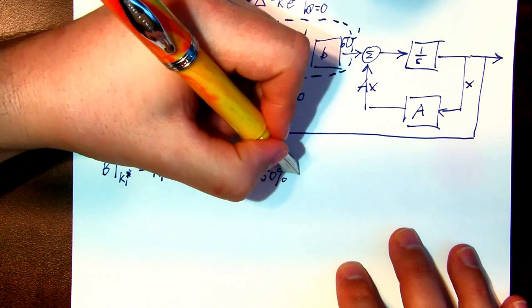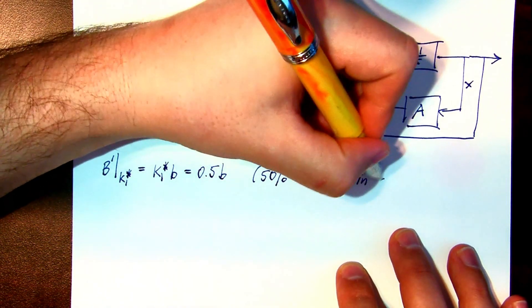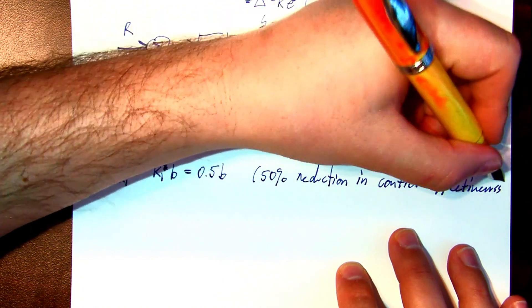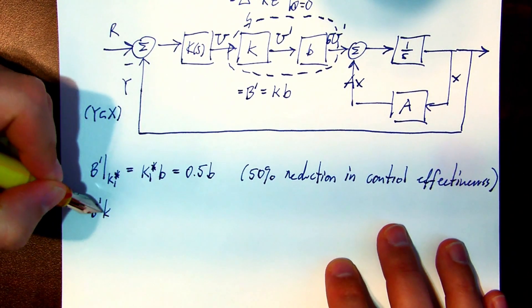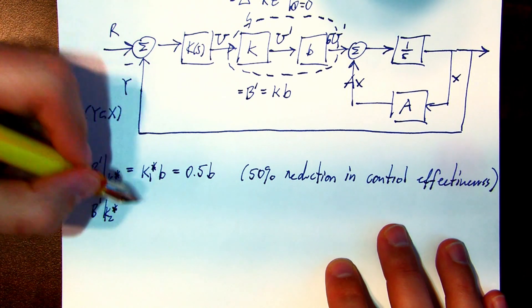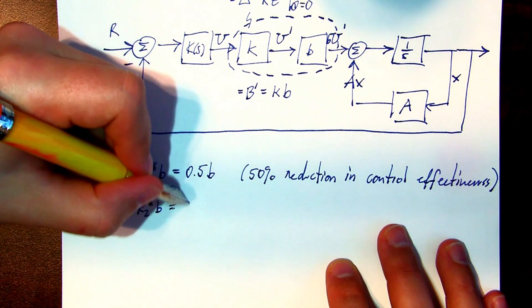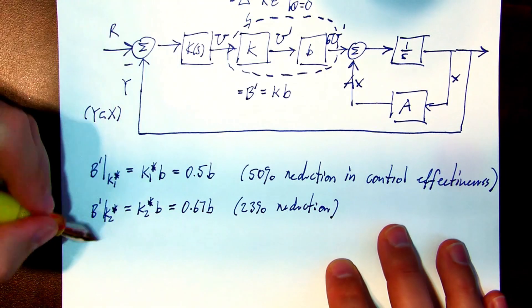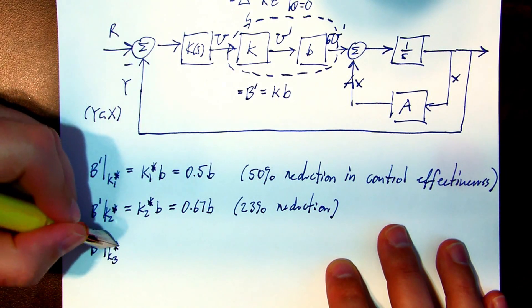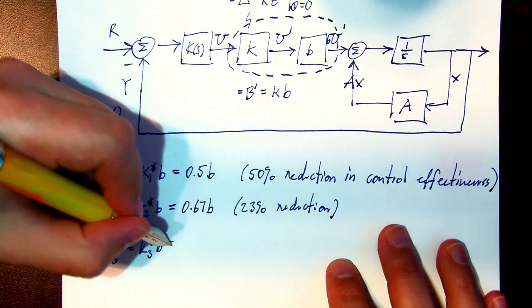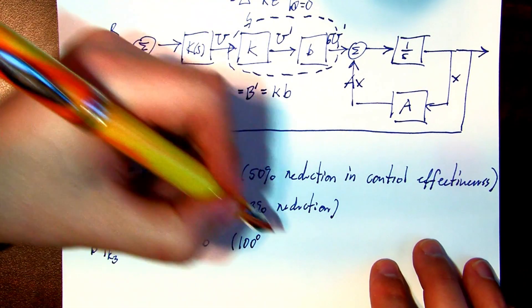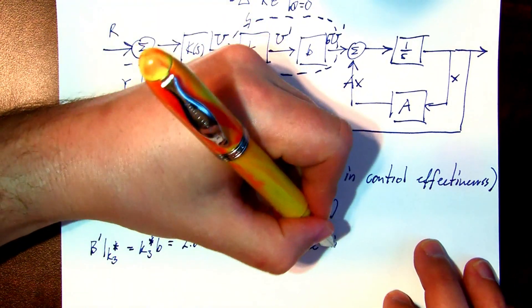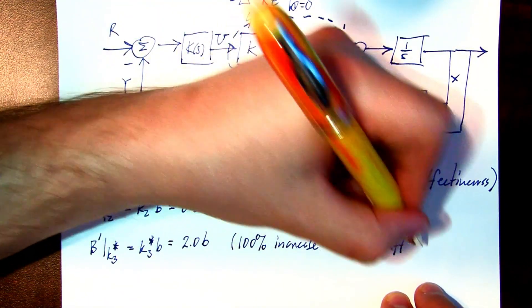For the first margin, it represents a 50% reduction in control effectiveness. For the second margin, at K star 2, 0.67 times B, or a 23% reduction. And for the positive gain margin, a factor of 2, or a 100% increase in control effectiveness.